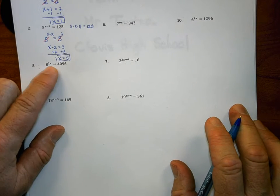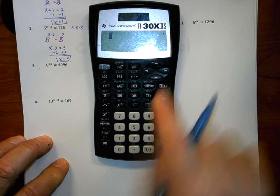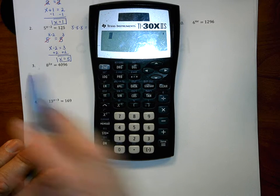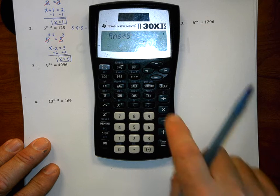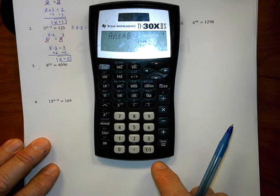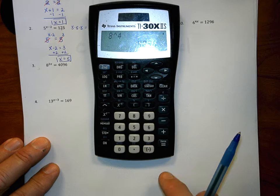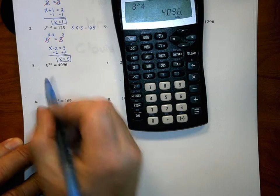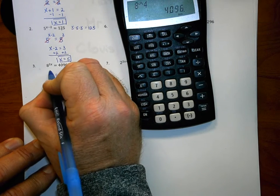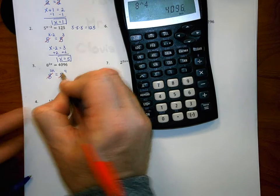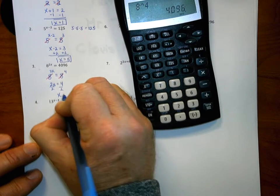Number 3: 8 to the 2x power is equal to 4,096. This is where a calculator comes in handy. We go to the larger side, 4,096, and check: 8 times 8 is 64, times 8 is 512, times 8 is 4,096. So 8 raised to the fourth power gives 4,096. Change 4,096 into 8 to the fourth power. The left side is 8 to the 2x power. The 8s cancel, leaving 2x equals 4. Dividing both sides by 2, x equals 2.